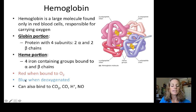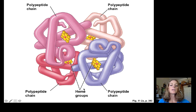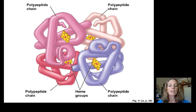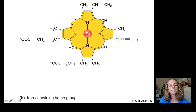When iron is bound to oxygen it turns red; when deoxygenated it turns a more blue-purple color. Hemoglobin can also bind, in different portions of the molecule, to carbon dioxide, carbon monoxide, acid, and nitric oxide. Each hemoglobin molecule has four heme groups, and oxygen binds at the center of each heme group where the iron sits.